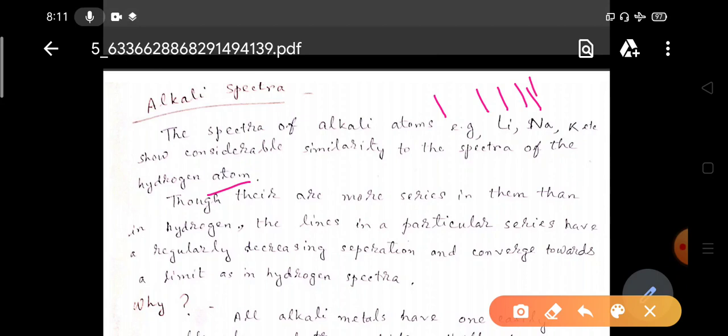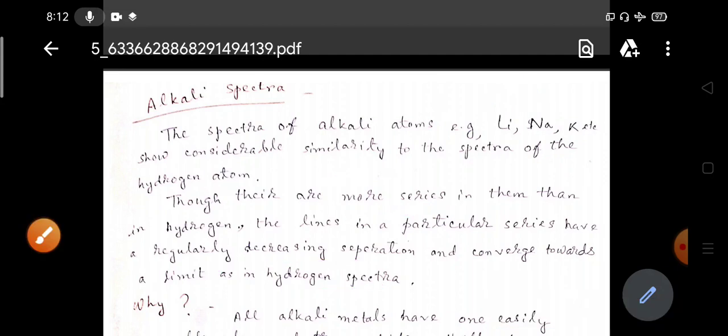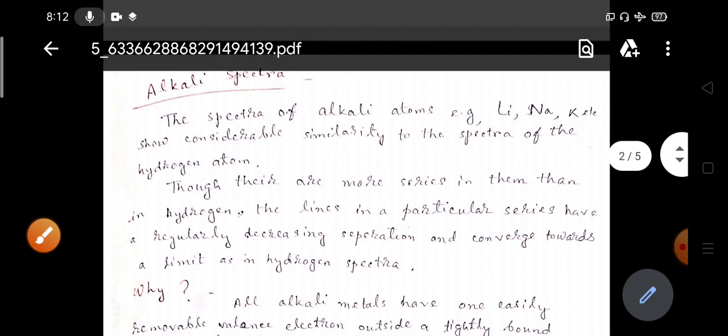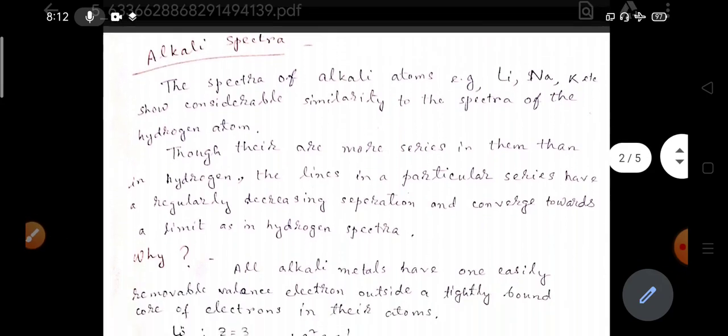The same feature we also observed in the alkali spectra. Though there are more number of series compared to the hydrogen atom, the particular series have regularly decreasing separation and converge towards the limit just like the hydrogen atom. That is why the similarity of the spectra to the spectra of hydrogen atom interested scientists to study about alkali spectra.